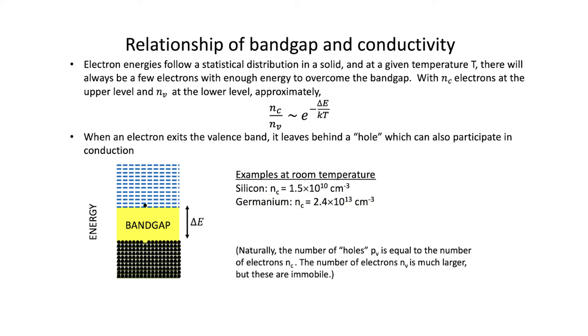When electrons in the valence band get promoted into the conduction band — say by heating or by light absorption — they leave behind openings or holes in the valence band. Any electron in the conduction band is free to move around the crystal, like water moving around a mostly empty bottle. But the hole in the valence band can actually move around too, similar to a small bubble of air moving around in a bottle full of water — if you move the water, the air bubble can move all over the place.